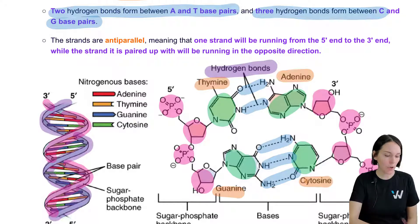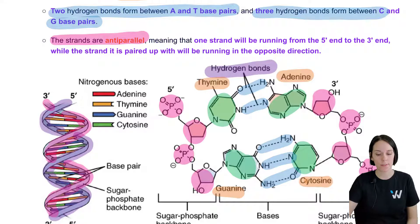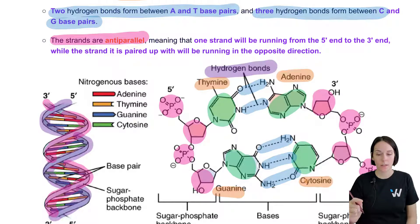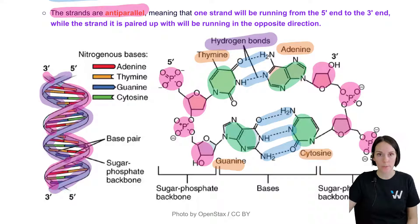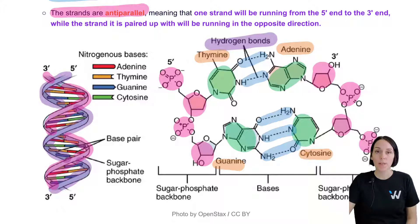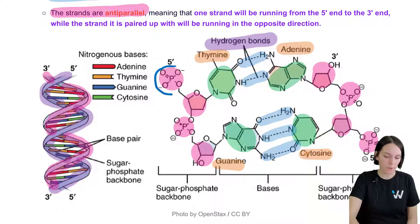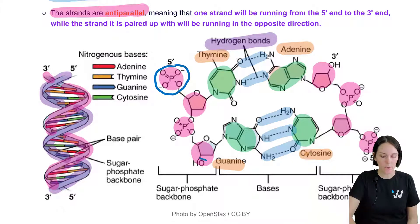In addition to being complementary, these strands are also anti-parallel. This means that one strand runs from the five prime to the three prime end, whereas the strand it's paired with runs in the opposite direction. Each strand has a five prime end and a three prime end. The five prime end has a free phosphate group — we can see that here on this strand — so we know this is the five prime end.